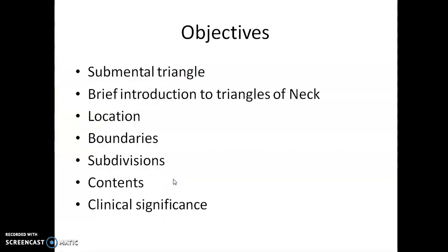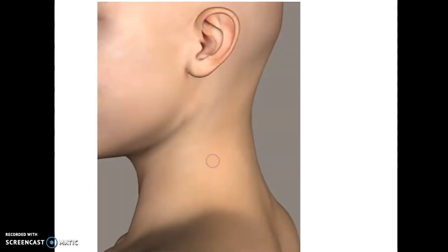The objectives of today's slide are: a brief introduction of all the triangles of the neck, location of the submental triangle, boundaries, contents, and clinical significance. The neck on a side profile appears like a quadrangular structure, but in three dimensions it is cylindrical.